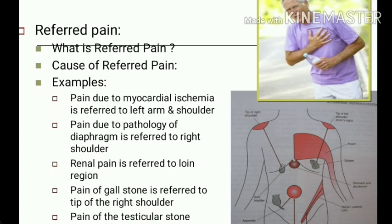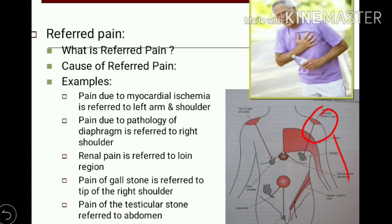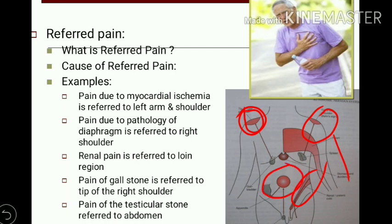The next variety is referred pain. Here, pain sensation originates due to irritation of a visceral organ but is felt at a site other than the affected or injured site. Usually the pain is referred to the somatic structure supplied by the same neural segment. Examples include: pain due to myocardial ischemia referred to the left shoulder and left arm; diaphragm pathology referred to the tip of the right shoulder; renal pain referred to the loin region; gallstone pain referred to the tip of the right shoulder; testicular stone pain referred to the abdomen; and ovarian pain referred to the umbilicus.